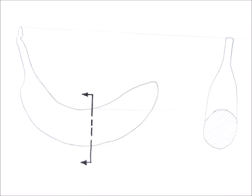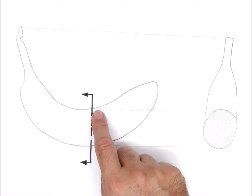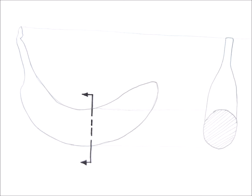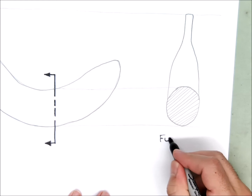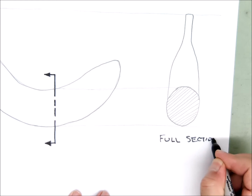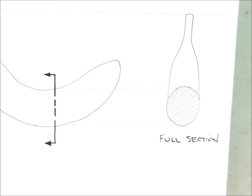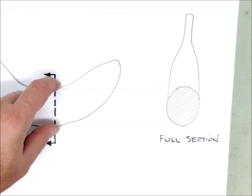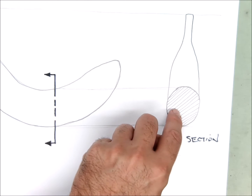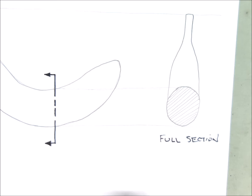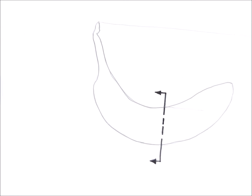We can worry about precision later when working with tools. So that is a section view — here's my front view as a regular view, and here's my side view as a section. This is also a full section. I sliced completely through the part at this point — it's fully sectioned. We don't leave anything unsectioned, but we did draw what was behind it.